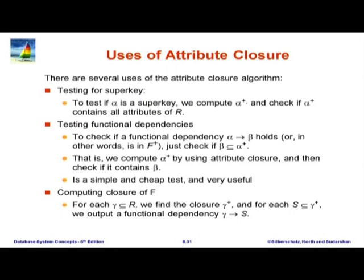What do we do with attribute closure? There are many uses. First, we already saw how to use it to test for super key: compute alpha+, check if it contains all attributes. We can also use it to test functional dependency: to check if alpha determines beta holds, simply compute alpha+, which is very efficient to compute. F+ can be very large and take a long time to compute, but alpha+ can be computed extremely fast. We check if beta is a subset of alpha+; if it is, the dependency holds.